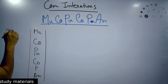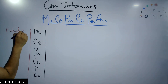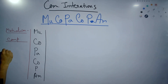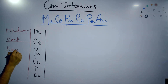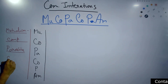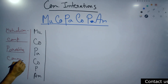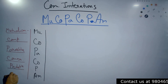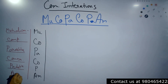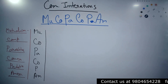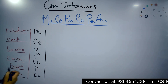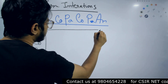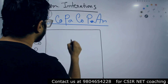MU is for mutualism, CO is for competition, PA is for parasitism, the second CO is for commensalism, P is for predation, and AM is for amensalism. These are all the different types of community interactions.